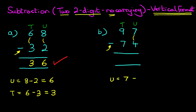7 minus 4 is 3. So we can write down 3 in the units column.